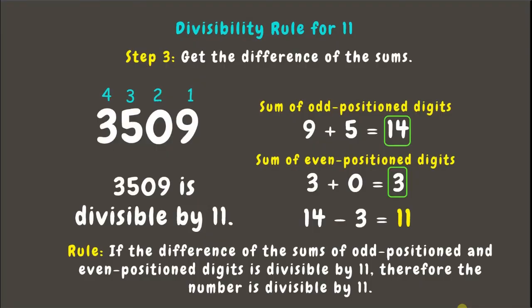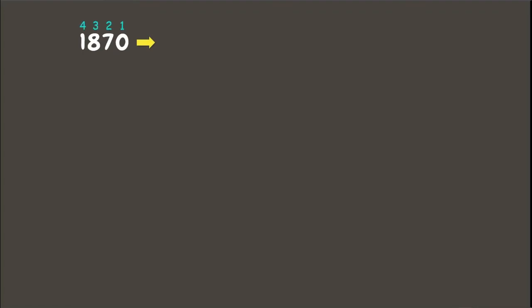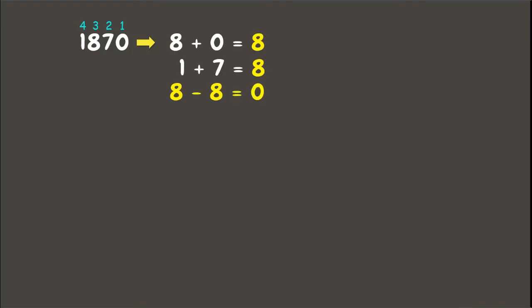Now let's try more examples. First example is 1870. Let's label the position of the digits first. Now let's add the odd position digits, which are 0 and 8, and that will be 8. Next, let's add the even position digits: 1 plus 7, which is 8. Final step: 8 minus 8 equals zero. Therefore, 1870 is divisible by 11.